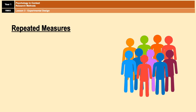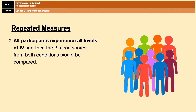Repeated measures is our second design. It's the opposite of independent groups because all participants experience all levels of the IV — that is your one-liner to remember it. After completing both conditions, the mean scores for both conditions would be compared.